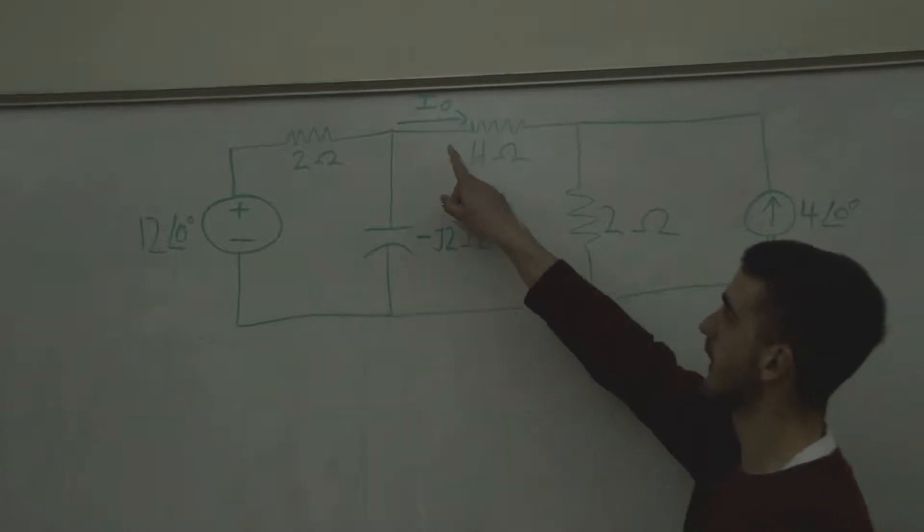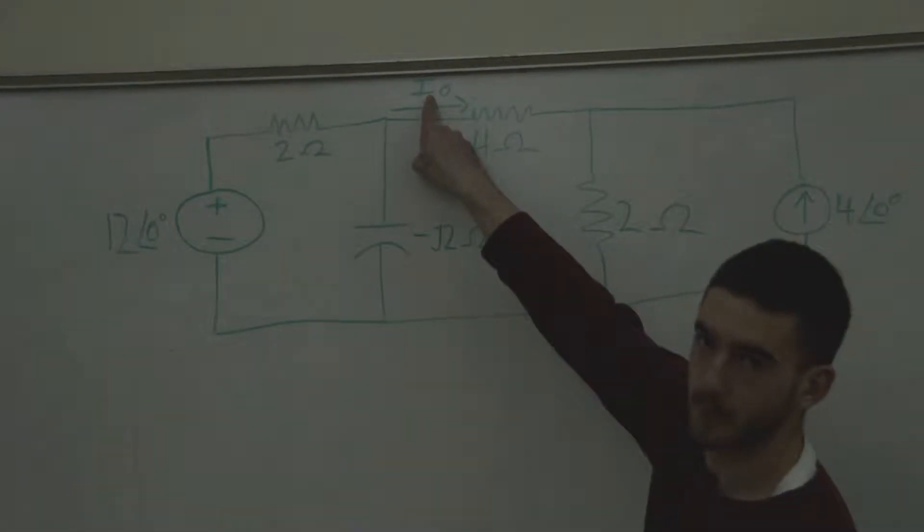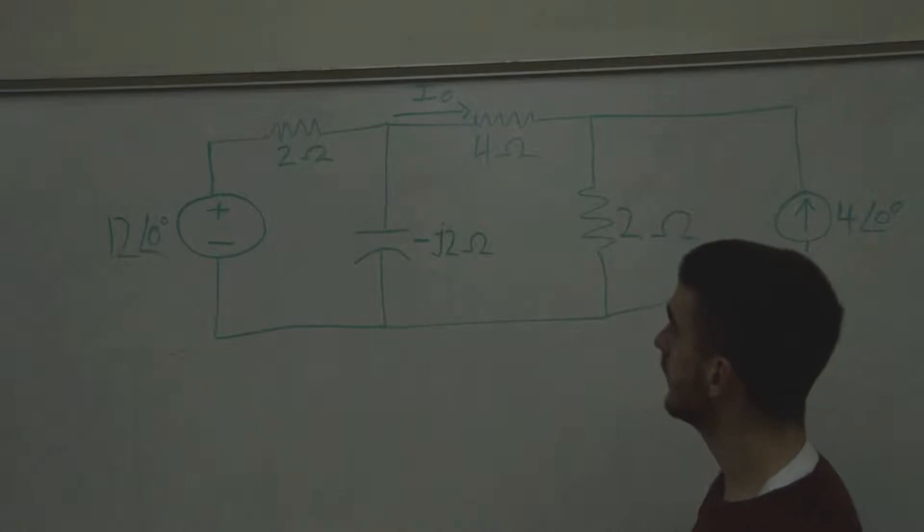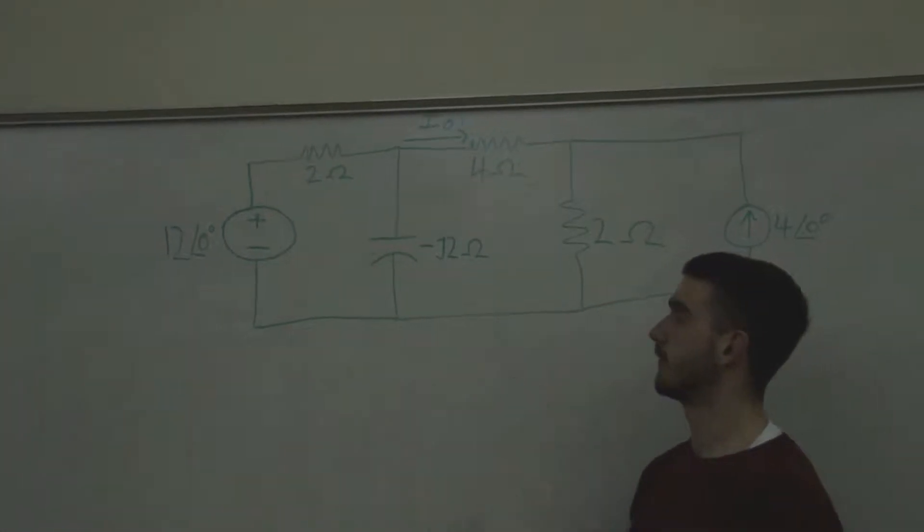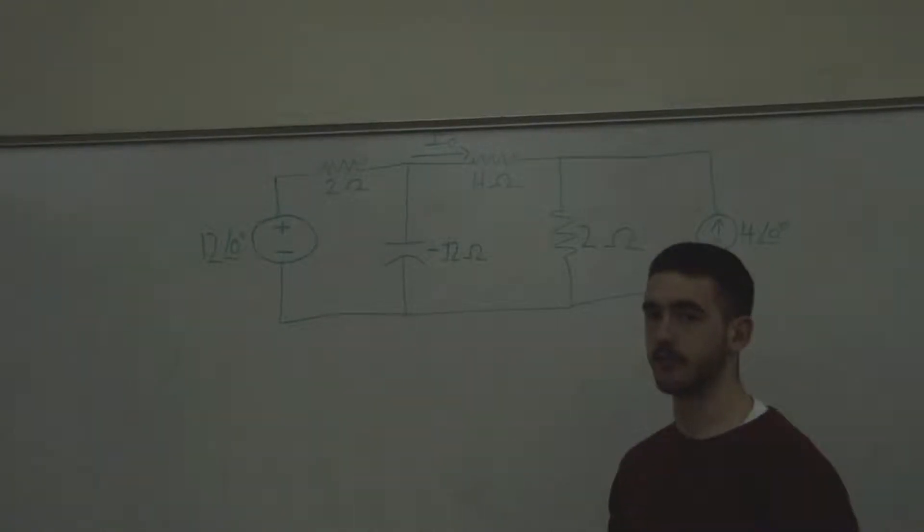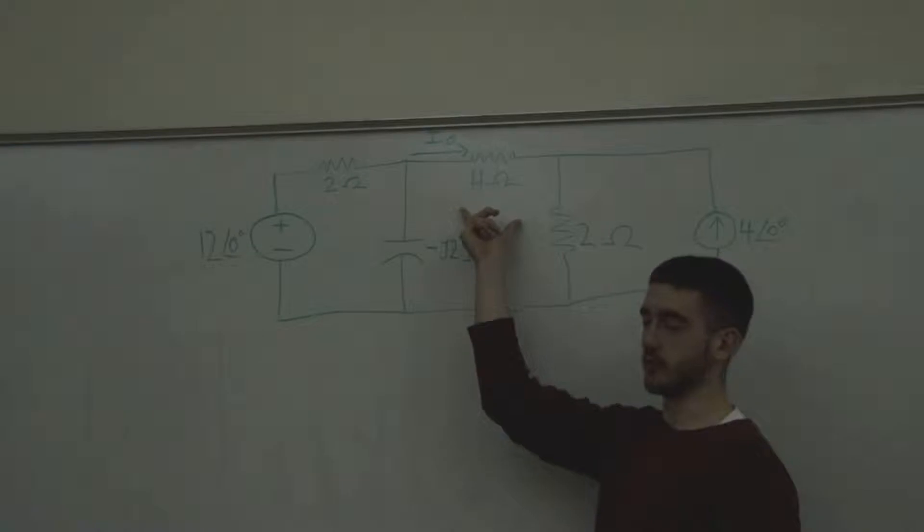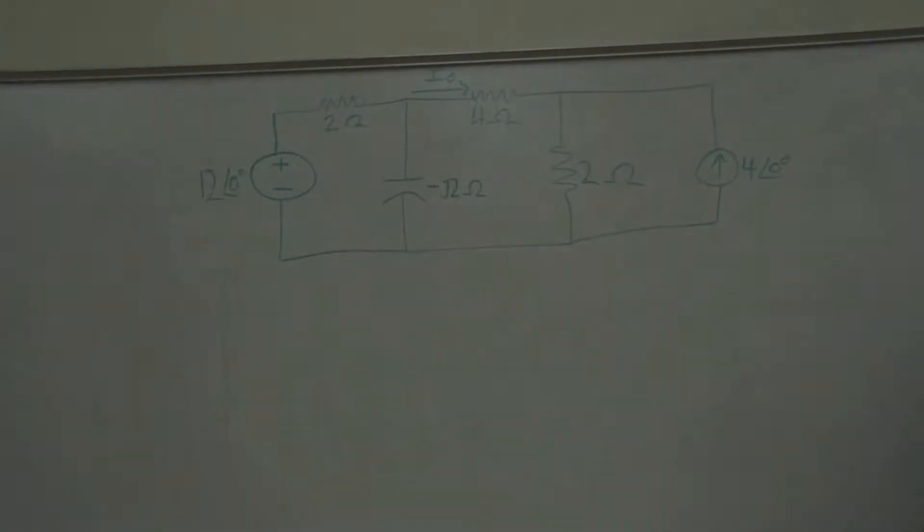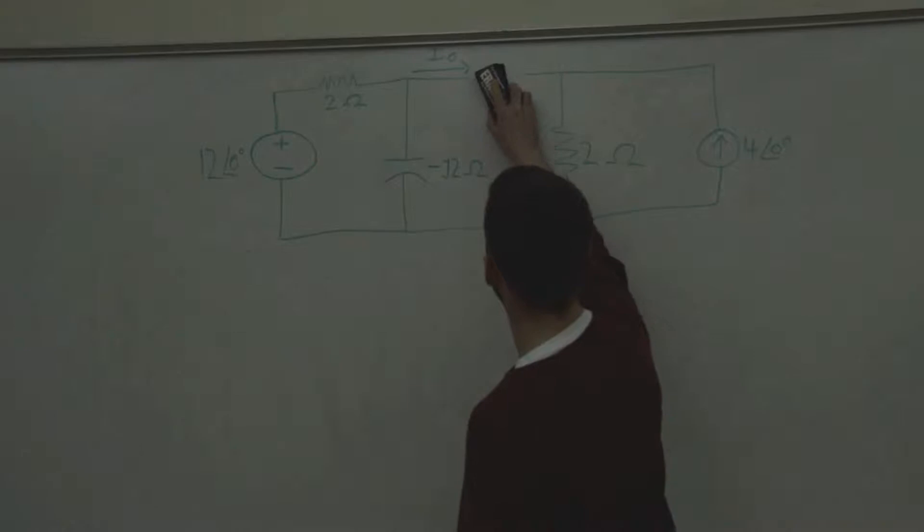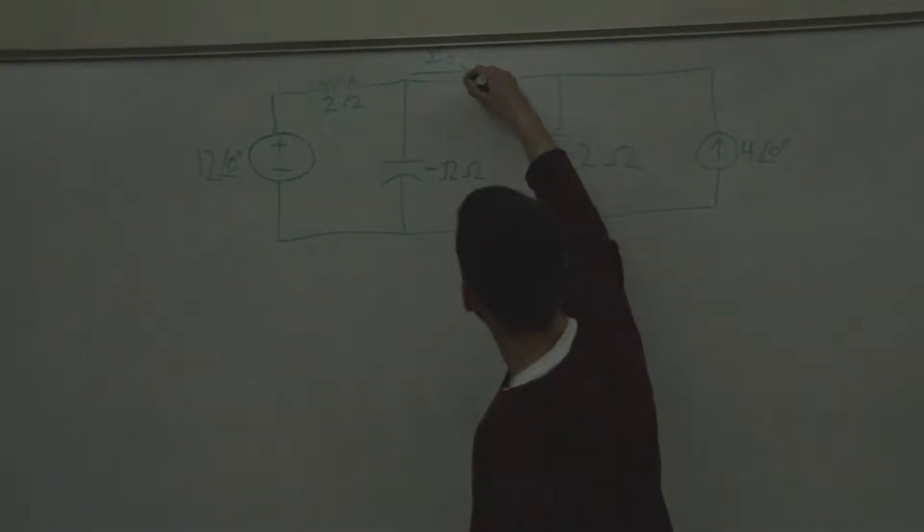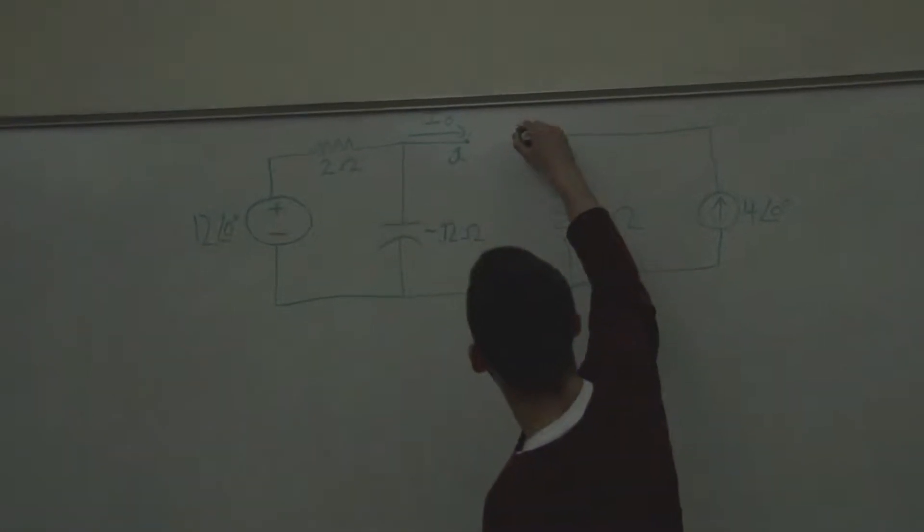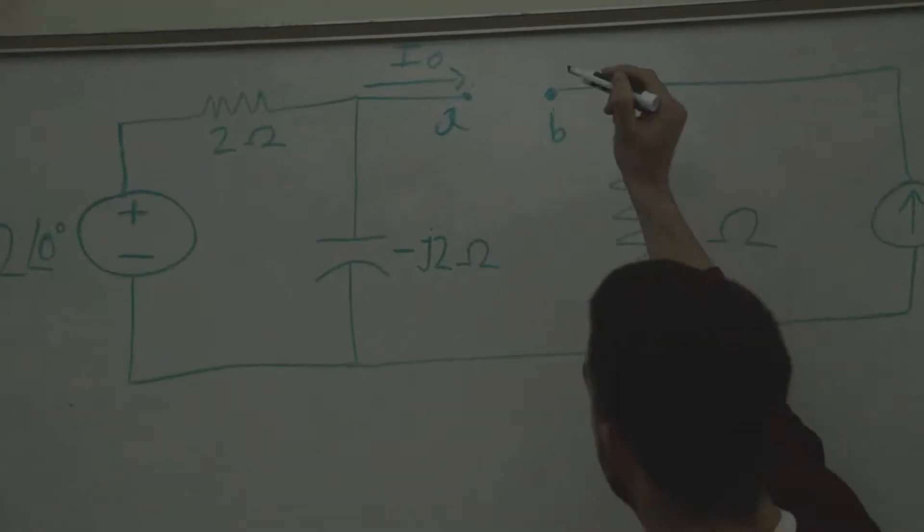Specifically we're trying to find what's this current up here in phasor form. The way we're going to do that is we're going to find the Thevenin equivalent of this circuit. So the first thing we'll do is find the open circuit voltage here. Just imagine that that resistor is gone and then let's call this A and call this B.